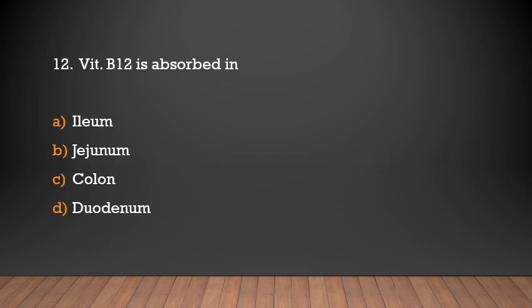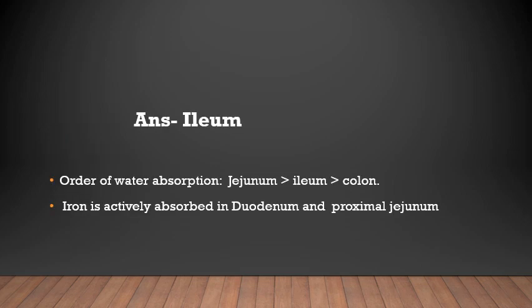Vitamin B12 is absorbed in: ileum, jejunum, colon, or duodenum? Answer: Ileum. Vitamin B12 is absorbed in the ileum. Order of water absorption is maximum in jejunum, followed by ileum and colon. Iron is actively absorbed in the duodenum and proximal jejunum.